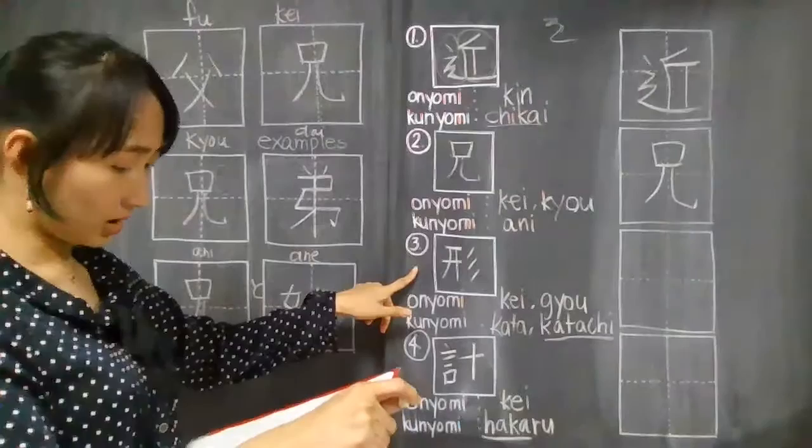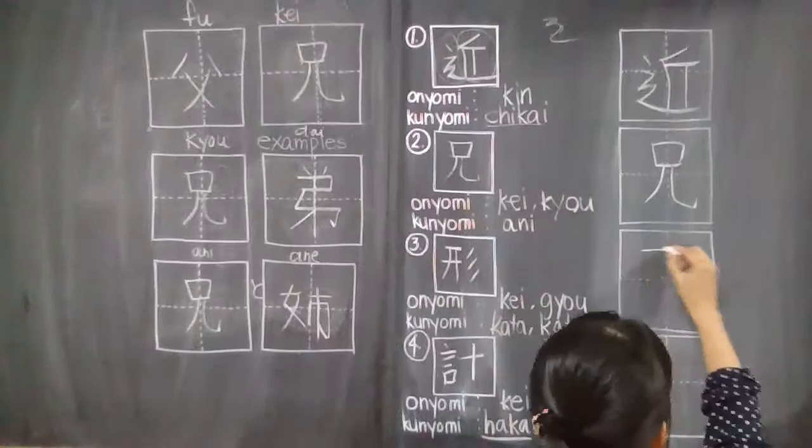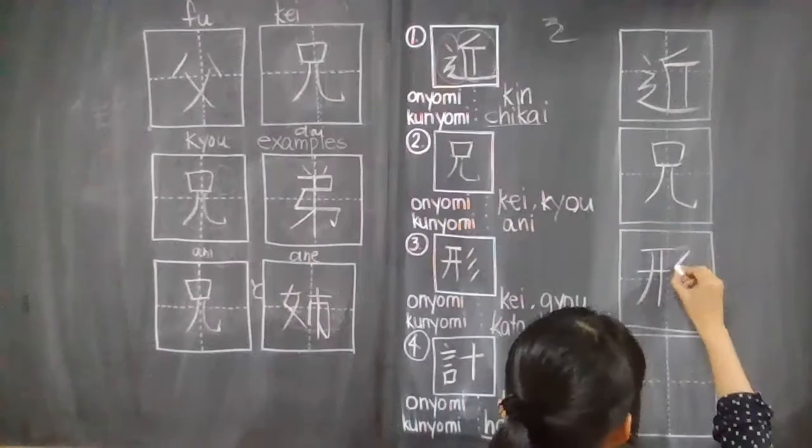For this kanji, there are seven strokes. So one, two, three, four, five, six, seven. The examples that I have for you are...